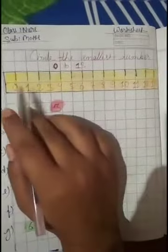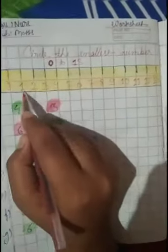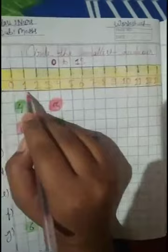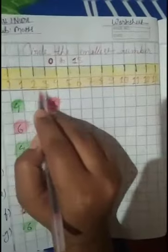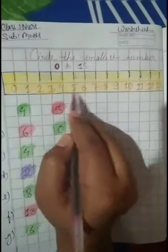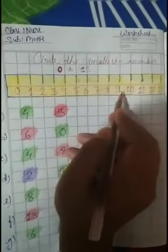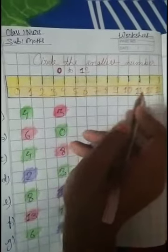So first, here number lines are made. So first read: 0, 1, 2, 3, 4, 5, 6, 7, 8, 9, 10, 11, 12, 13.